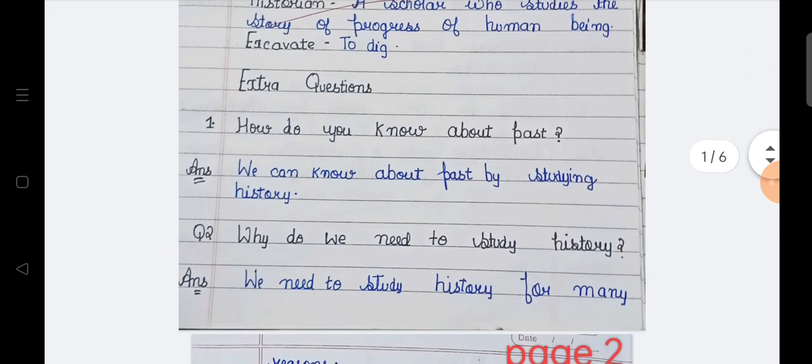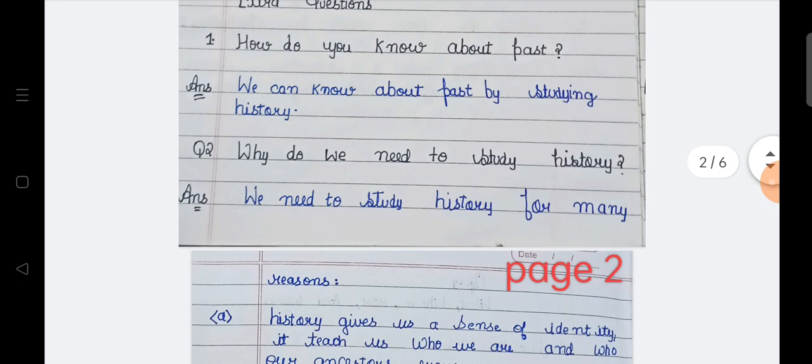Now let's discuss extra questions. How do you know about past? From where you get the information about past? So the answer is we can know about the past by studying history. So if you will study history, it will tell you all the facts related to early life and whatever you want to study about past. With maps also.